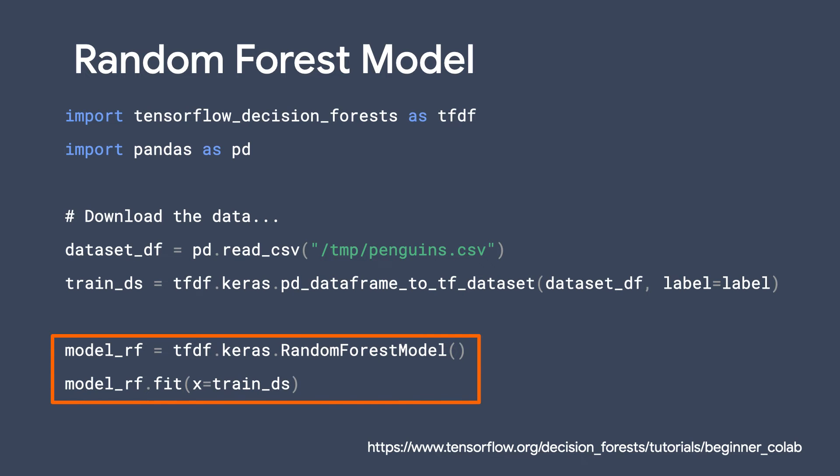And now we train the model. The model, with the default parameters, is composed of 300 trees. As mentioned before, each tree is being trained on a random subset of the features and a random subset of the training dataset. This is how the balance between correlation and independence is achieved.